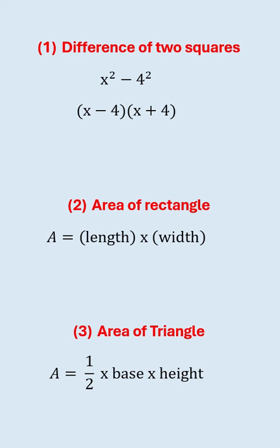Number two, area of a rectangle is given by length by width and area of a triangle is half times the base times the perpendicular height.